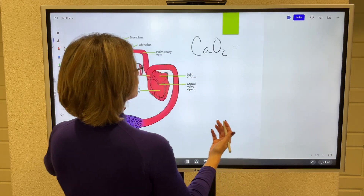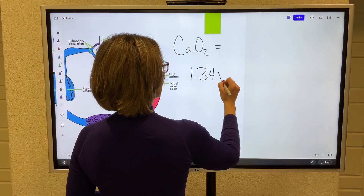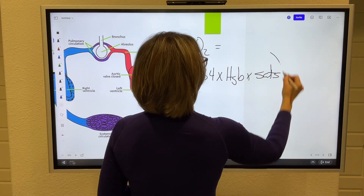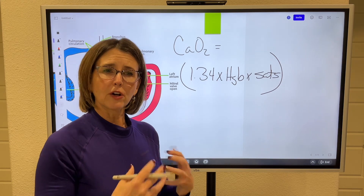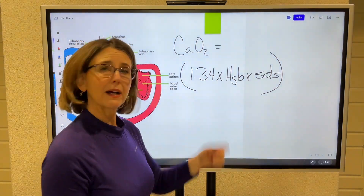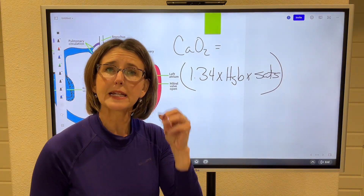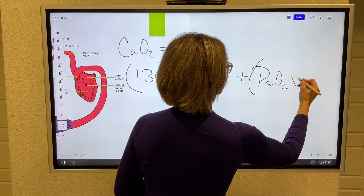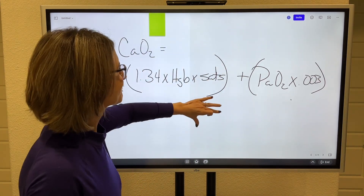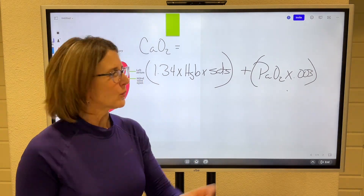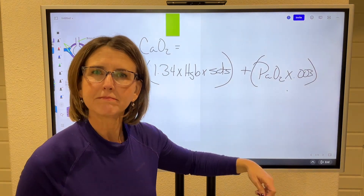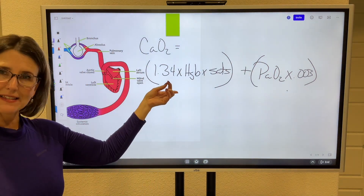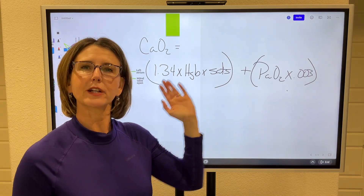Part of this equation is 1.34 times hemoglobin times the saturation. The vast majority of oxygen carried to our tissues is bound to hemoglobin — this is the side of the equation that really matters. The other side is what's dissolved in plasma: PaO2 times 0.003. If all a person had to live on was the oxygen dissolved in plasma, they'd die — it's not even enough oxygen to sustain life. What really matters is the hemoglobin-bound side.